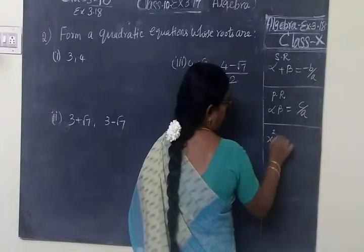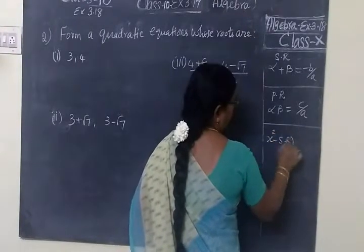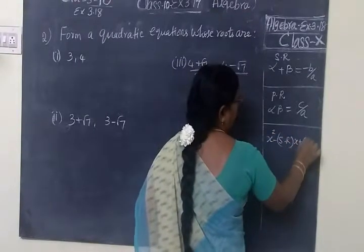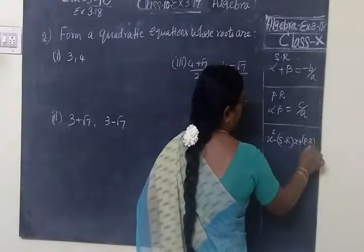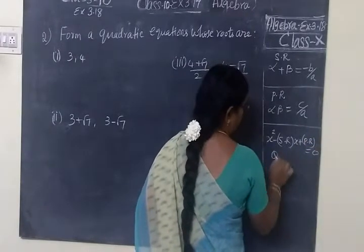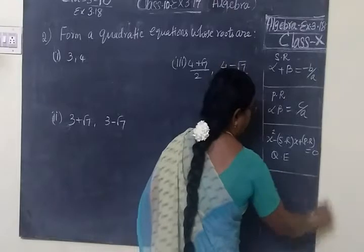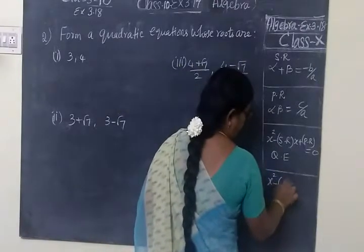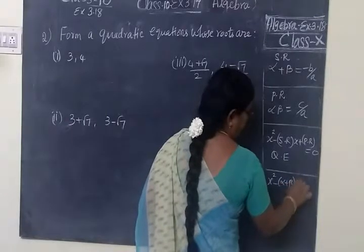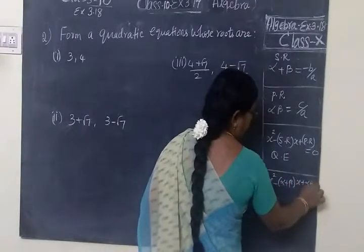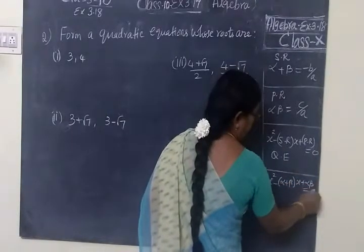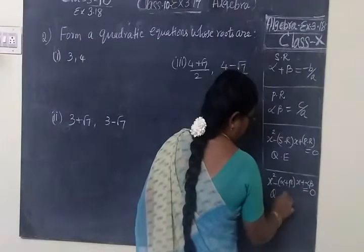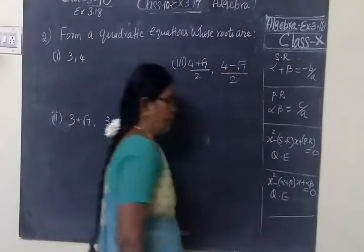So, x square minus sum of the roots x plus product of the roots equal to zero. This is the standard form of a quadratic equation. If we use that, it will be x square minus alpha plus beta x plus alpha beta equal to zero. This way also you can write it. Anyone you can use.